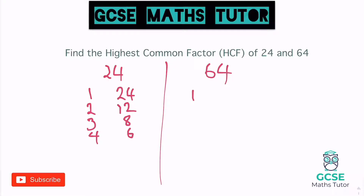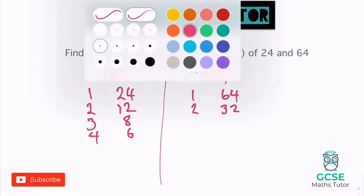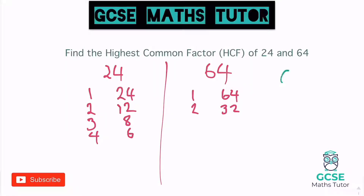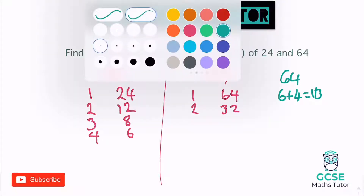Moving on to 64: we've got one and 64, two and 32. Now, does three go in? There's a nice little trick here — add together the digits in 64. Six plus four is 10, and 10 is not in the three times table. So 64 doesn't divide by three.